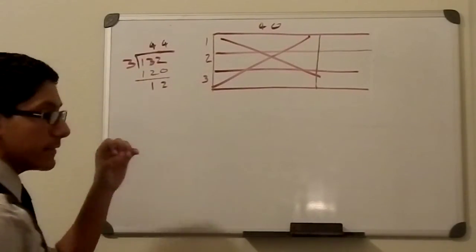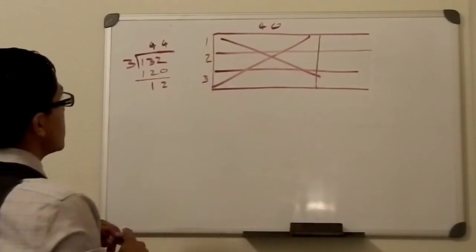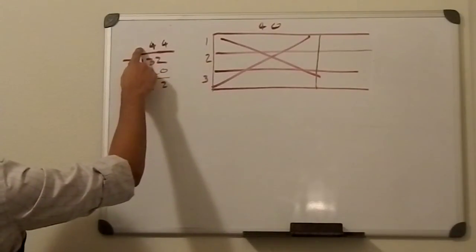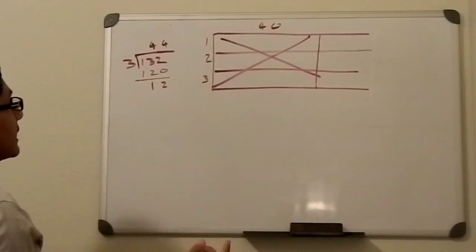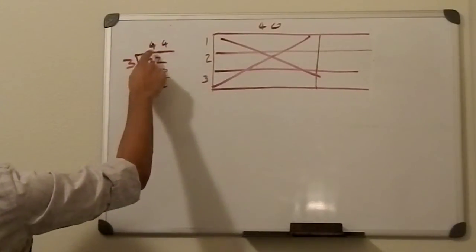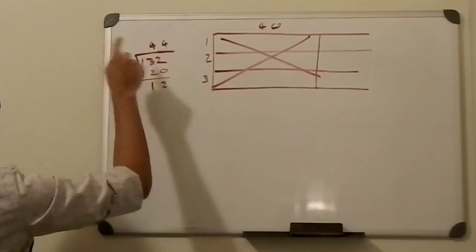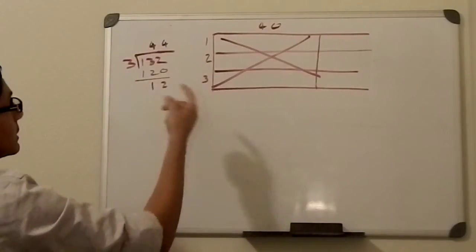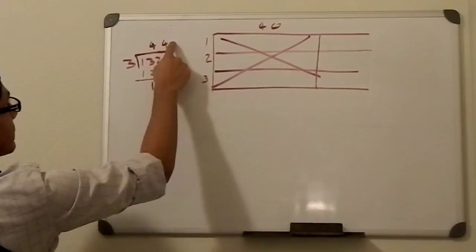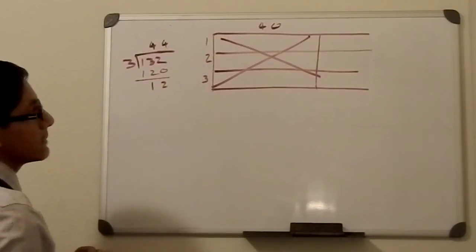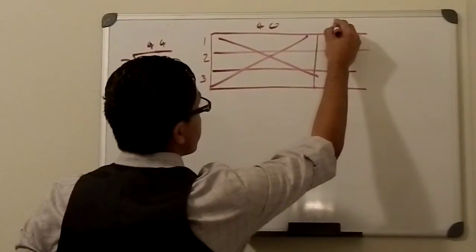So like when we did it right here for the hundreds, it's because we didn't have any hundreds. It didn't go in a hundred amount of times. And so now we go into the tens place and it goes in four times, 40 times. So 40 times 3 is 120, subtracting we get 12. And so now we go to the ones place and it goes in four times. So here it goes in four times, and that covers our 132 amount. And we can add them up and say that it's 44. And that's it.